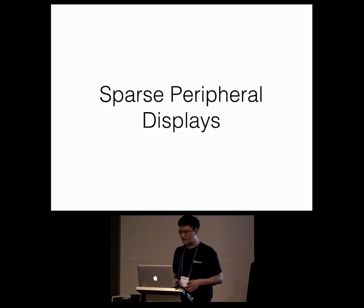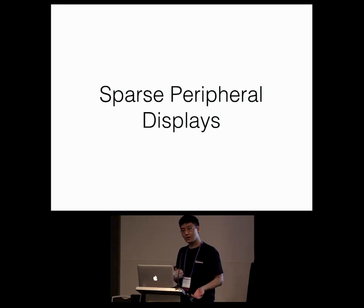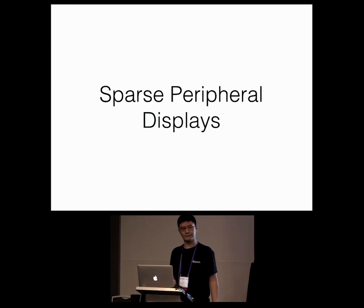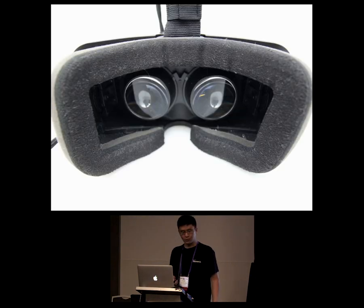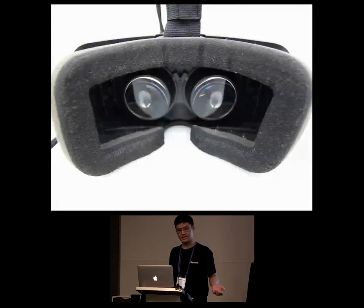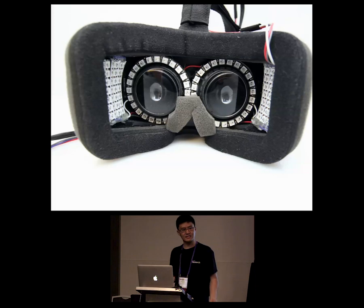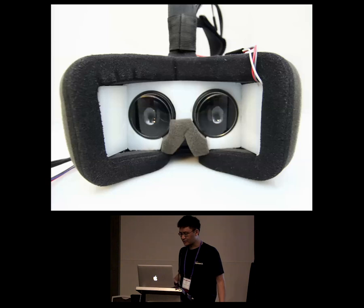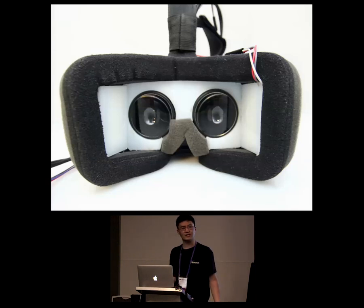Our solution is the sparse peripheral display: a field-of-view extension consisting of a sparse array of LED lights positioned in the visual periphery. We developed two prototype devices. The first, dubbed Sparse Light VR, was based on an Oculus Rift DK2, to which we added 70 LEDs to form the sparse peripheral display, covered with a translucent Delrin plastic diffuser to soften and distribute the light.